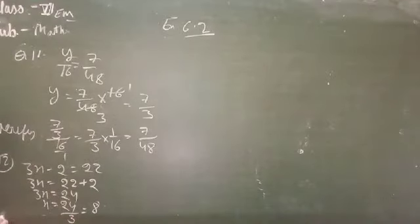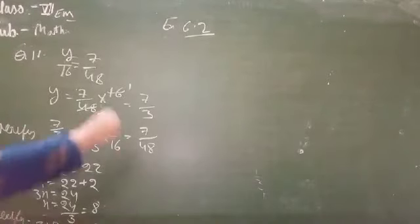Now verify the answer. Verify: 3 into x, which is 8, minus 2 equals 22. 3 times 8 is 24, minus 2 equals 22. 24 minus 2 equals 22. Verified.